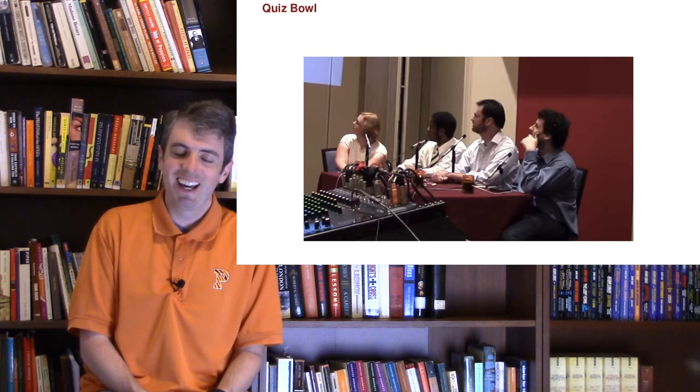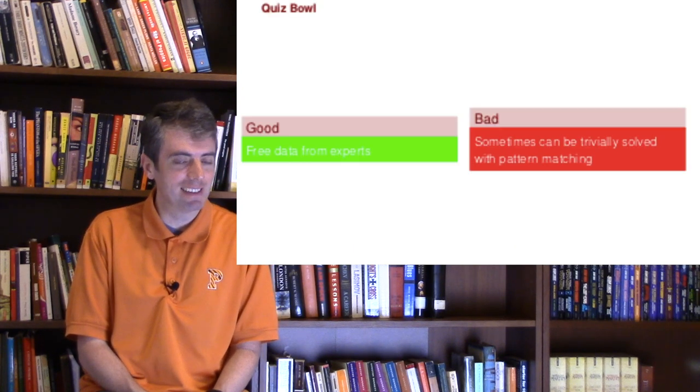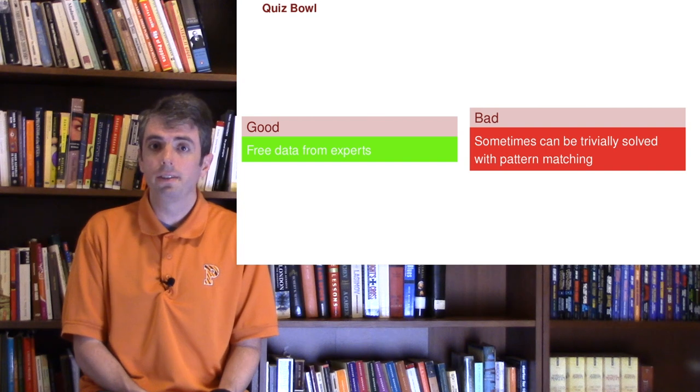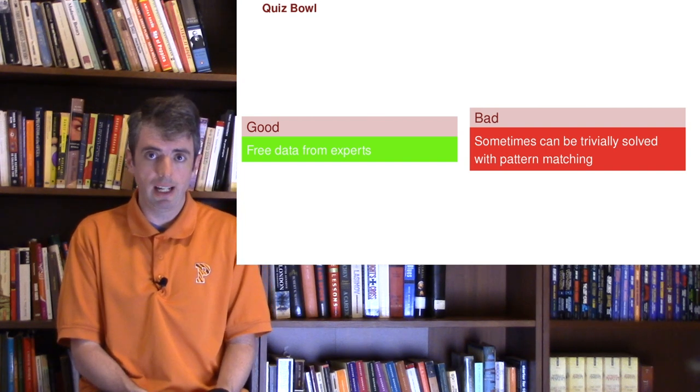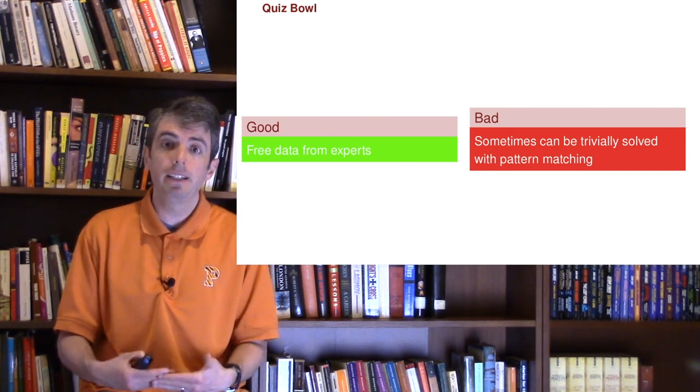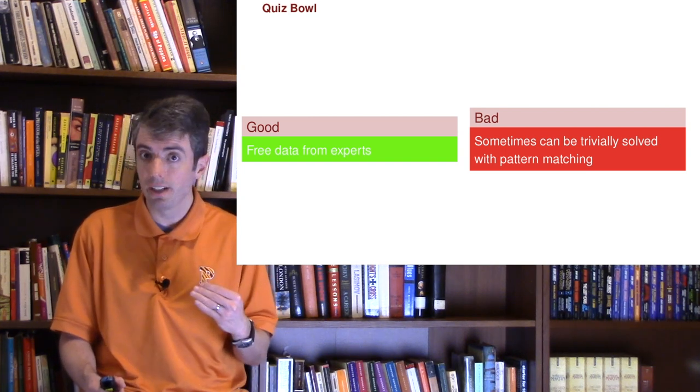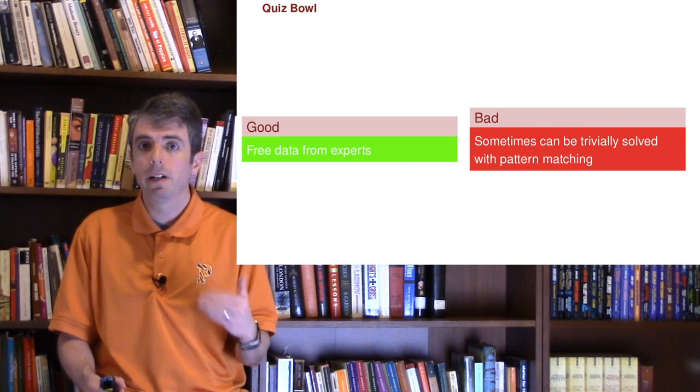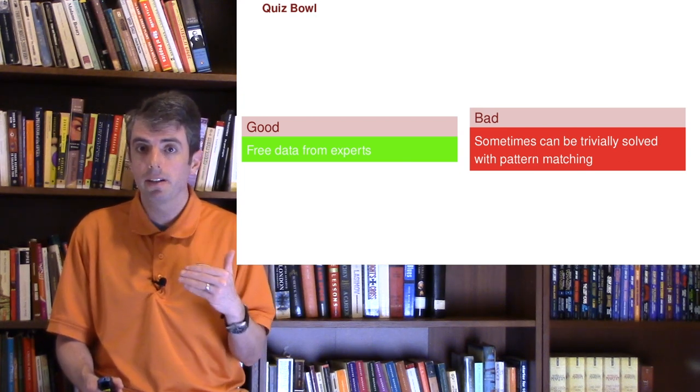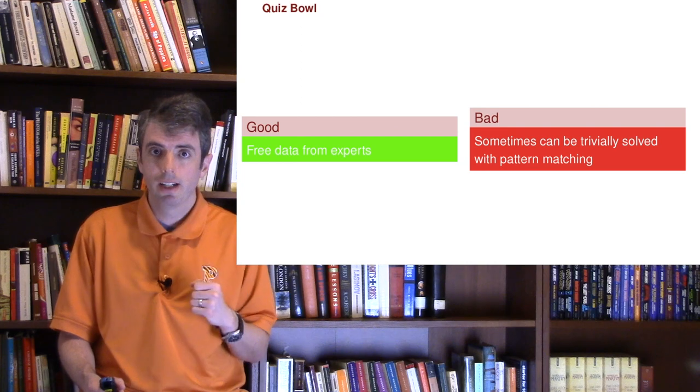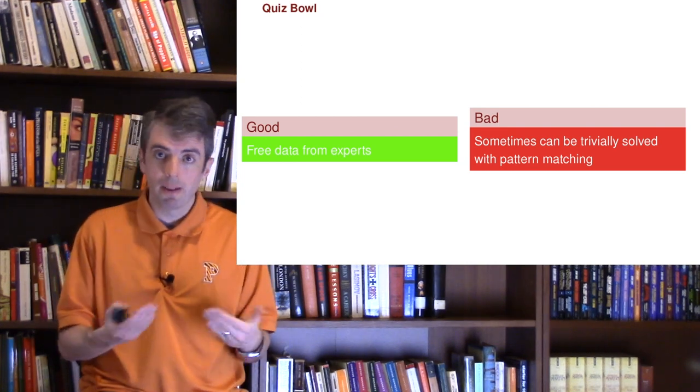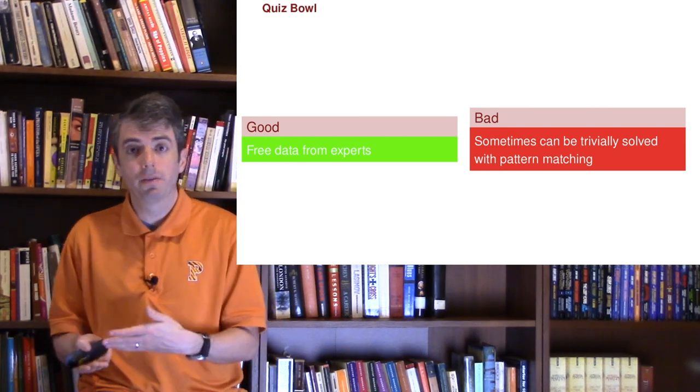So let's now turn to my hobby horse, Quiz Bowl. So this is the form of question answering that I am trying to champion, so I am very biased here. It is the gold standard in human question answering. So as a result, we get a lot of free data from experts. These are not crowd workers, these are people who are passionate about human question answering, and we're using their expertise and their experience to improve computer question answering. Now, the downside is that sometimes what's difficult for a human isn't difficult for a computer.